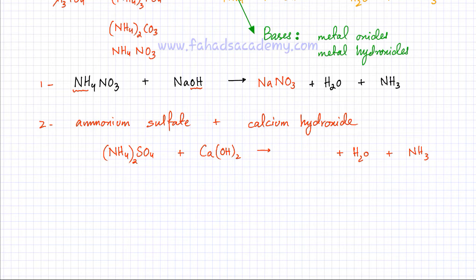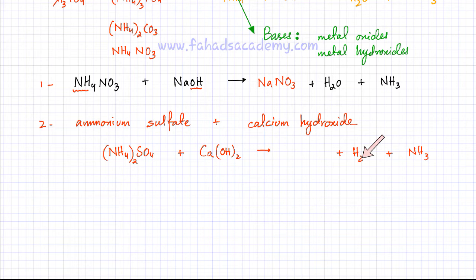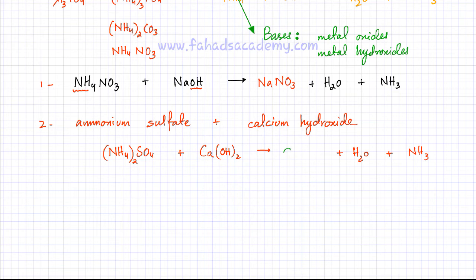The ammonium ions got converted into ammonia gas. The OH- ions got converted into water. The only leftover ions are calcium and sulfate. Writing the positive ion first: calcium is 2+, SO4 is 2-, so the formula of the salt is CaSO4.